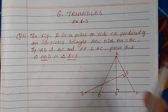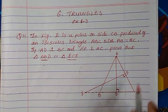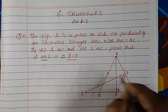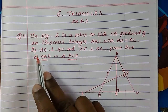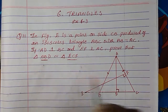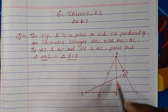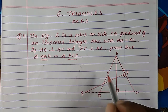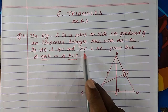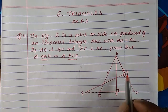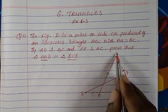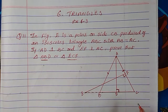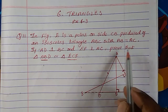AB is equal to AC, so this side is equal to the other side. AD is perpendicular to BC, which means it forms 90 degrees. And EF is perpendicular to AC, which also forms 90 degrees.